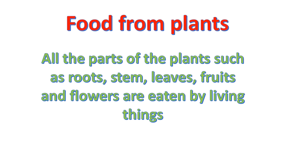Now we will see which parts of plants we eat. All the parts of the plants such as roots, stem, leaves, fruits and flowers are eaten by living things. In the previous chapter, we have already learnt the different parts of the plants, and all those parts can be eaten as food by humans and other animals.